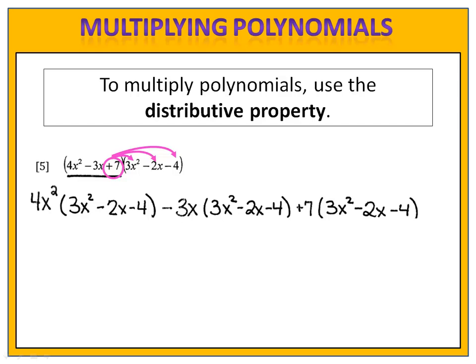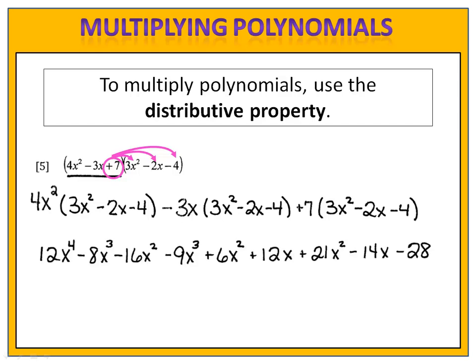It'll take a little bit of work and a little bit of care to get through this, but that's nothing we can't handle. When we do the multiplication, we end up with 12x to the 4th minus 8x to the 3rd minus 16x squared minus 9x to the 3rd plus 6x squared plus 12x plus 21x squared minus 14x minus 28.